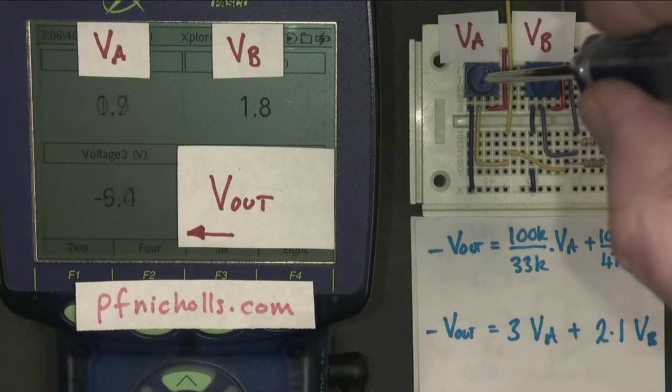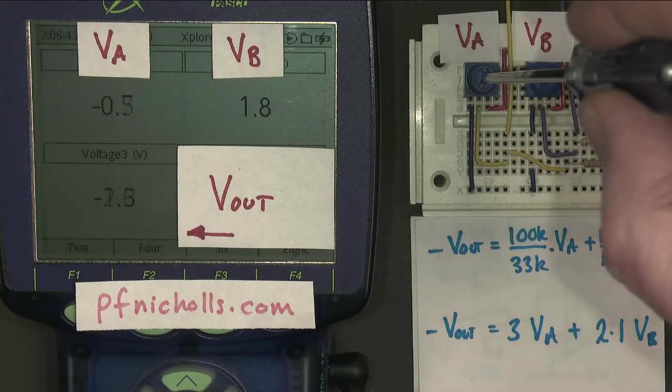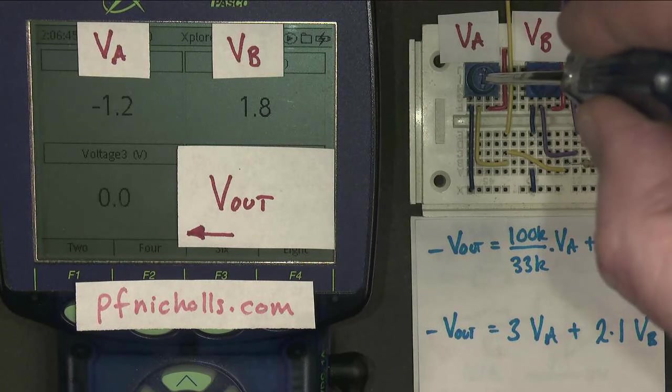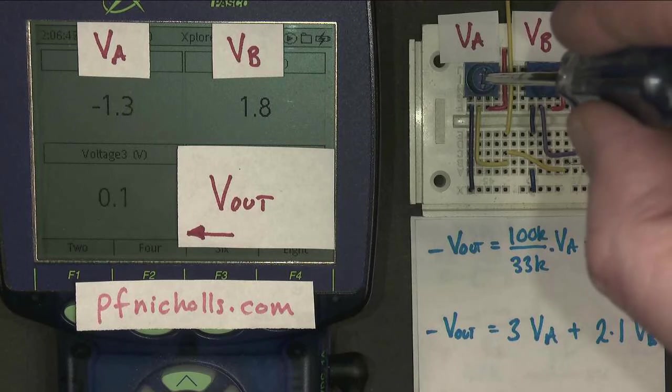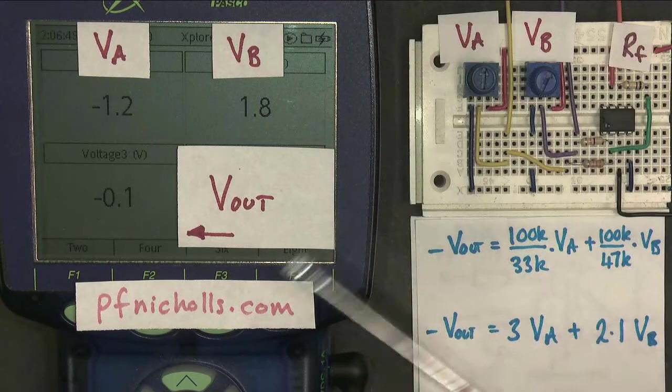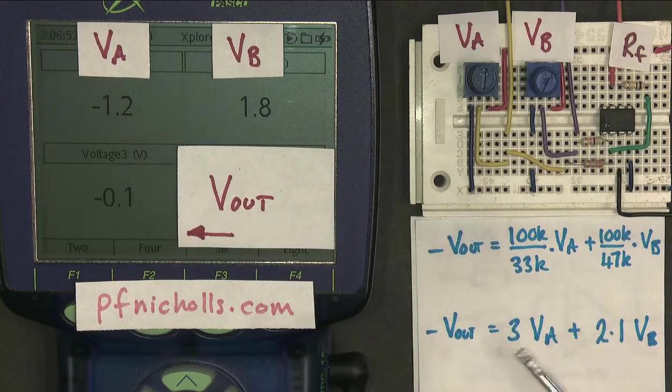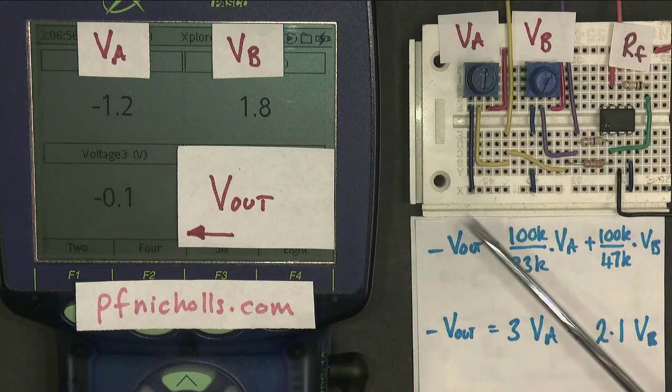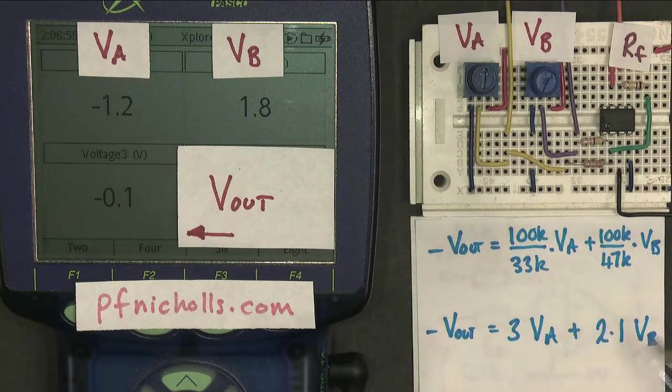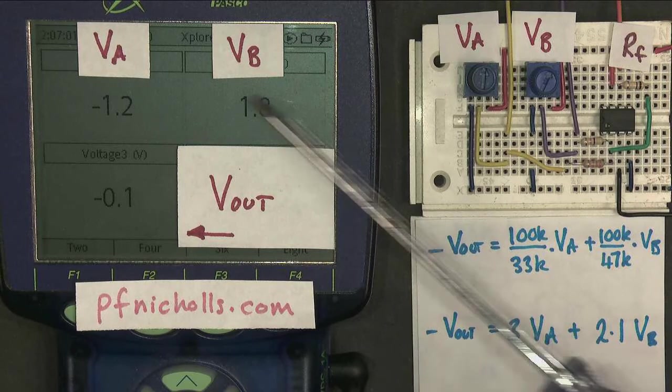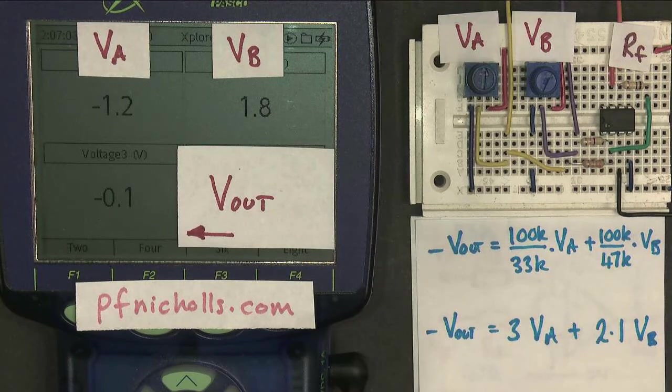And if I make Va negative, I should be able to reduce the output to zero. But now, Va is only minus 1.2 volts times 3 is 3.6. Vb is 1.8 volts times 2 is 3.6. These two cancel out to give me almost zero again. It's a summing amplifier circuit. It's fantastic.